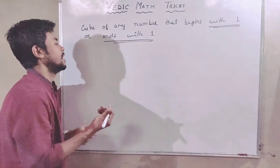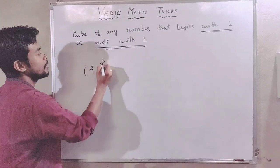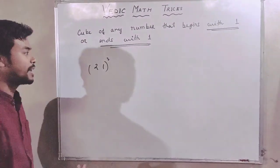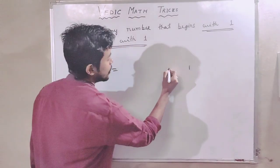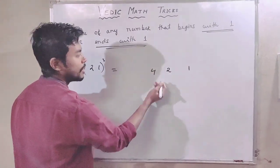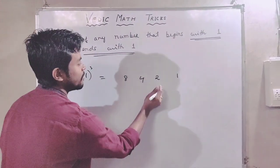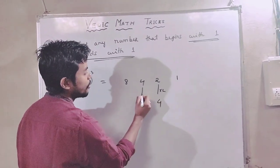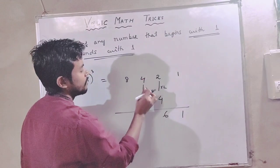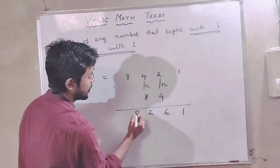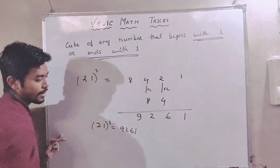Number 1 is equal to 1. 21 cubed is equal to 9261. Next: 2 squared is equal to 4, 2 cubed is equal to 8. 2 into 2 equals 4 — so we get 8. Plus 4: 1, 4 plus 2 equals 6; 8 plus 4 equals 12; 1, 3 equals 9 plus 1 equals 9. 21 cubed is equal to 9261.